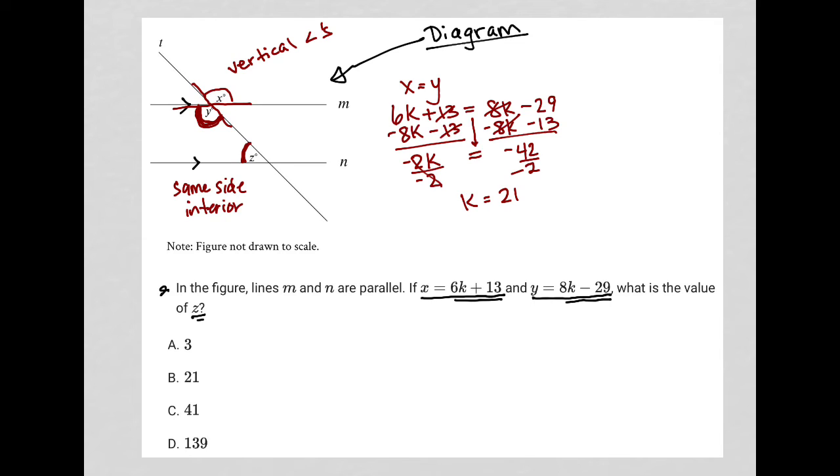Because they're on the same side of the transversal, this line T. They're both to the left of line T, line T here in blue. And they're both interior to the parallel lines. They're both inside the parallel lines. Same side interior angles are supplementary.